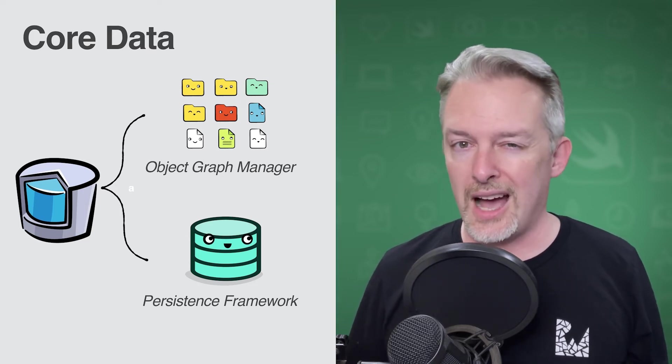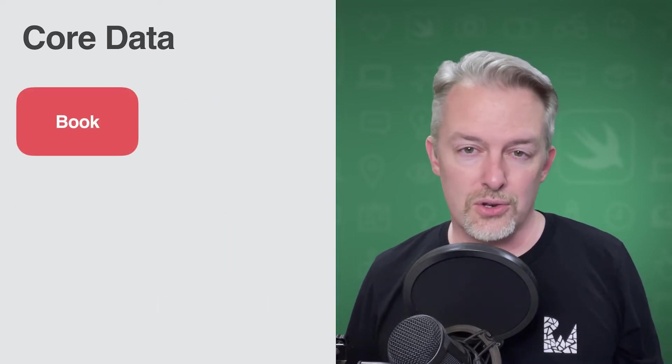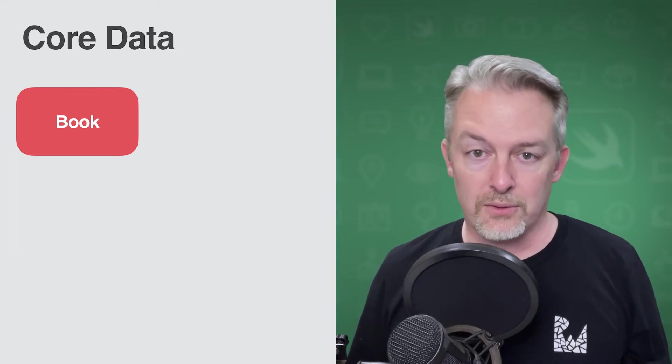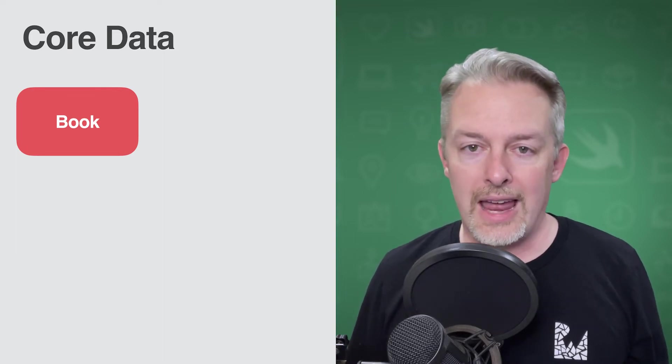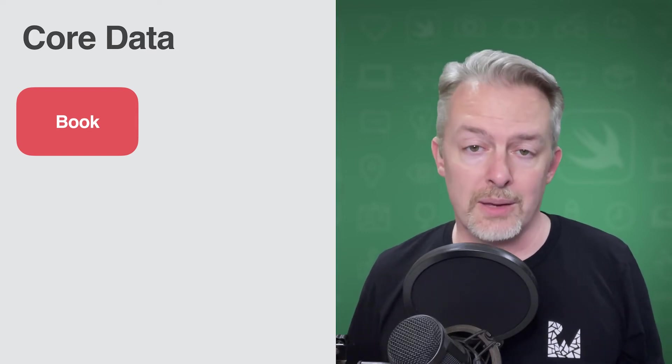So what's an Object Graph? If you've written an app that displays data to the user, you've probably created a class or two to model this data. For example, let's say you're creating an app to keep track of the books you read. You could start simple and have a book type.